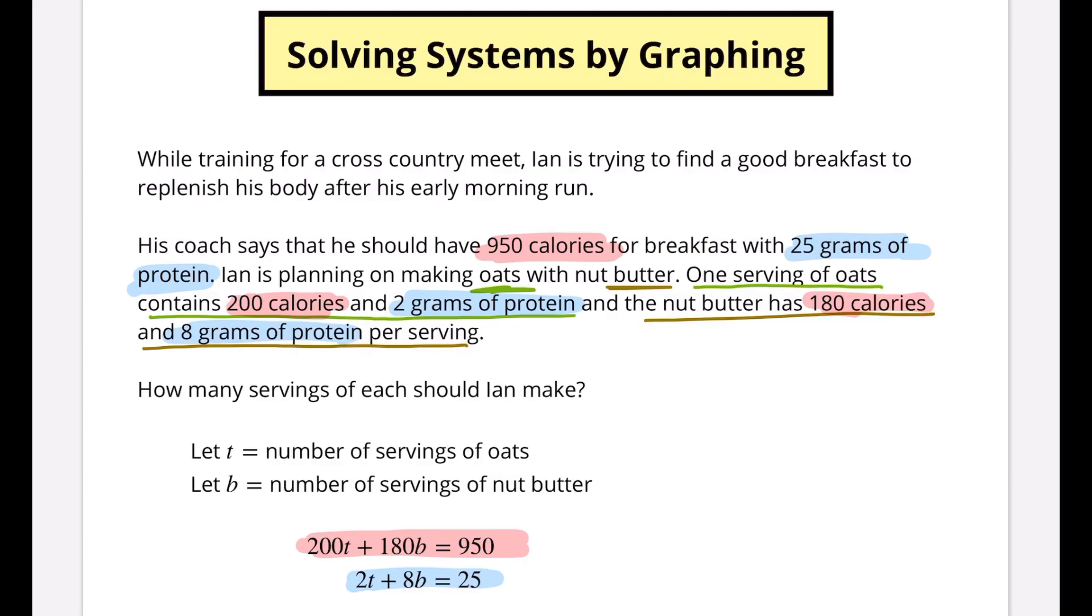So how do we now graph these two things? These numbers are so different. How can we possibly get them on the same graph? Well, we're going to use a really quick way, probably the quickest way you can graph an equation in this form. We're going to find the x-intercept and the y-intercept, or in this case the t-intercept and the b-intercept.